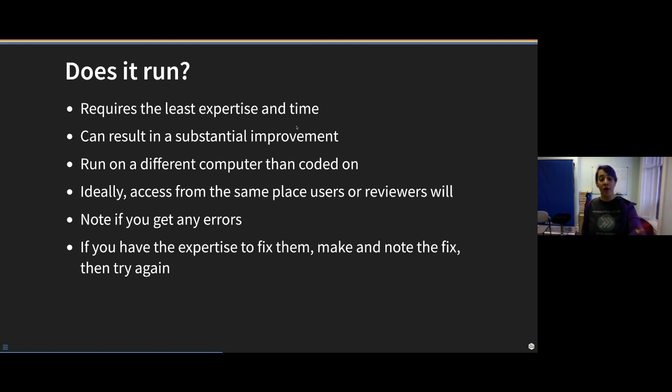So ideally you would get your colleague, or you would if you were doing the code review, access it from the same place that users would. So if you're sharing data and code for a preprint, are you putting it on the OSF? Then you would ask the code reviewer to download it from the OSF. Just make notes if you get errors. If you have the expertise to fix the errors - sometimes they're quite simple - make a note about the fix and then try again. Because often once you fix errors at the beginning of a script, that can uncover later errors.